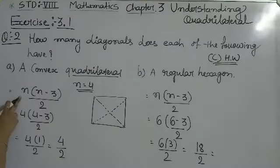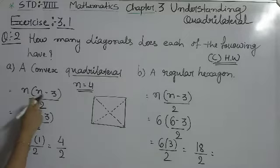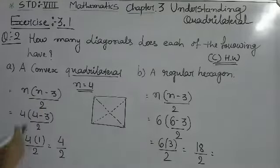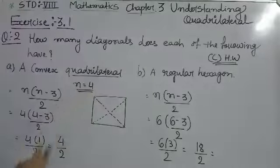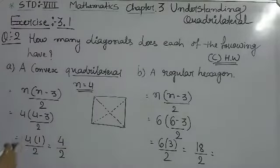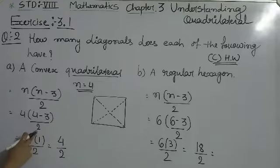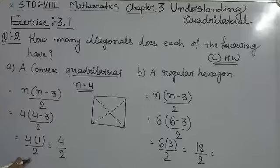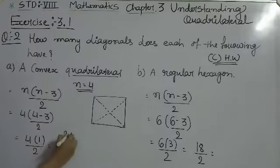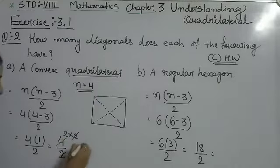The formula is n(n-3)/2. We have n equals 4, so 4(4-3)/2. 4 minus 3 equals 1, then 4 times 1 equals 4, divided by 2 equals 2. So the answer is 2.